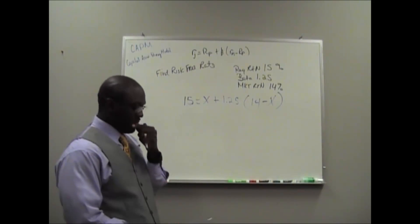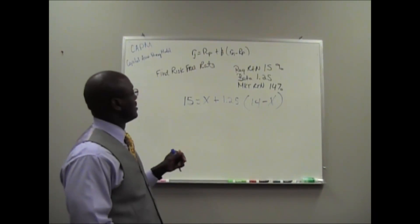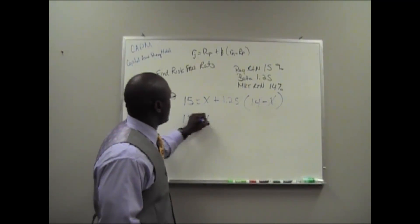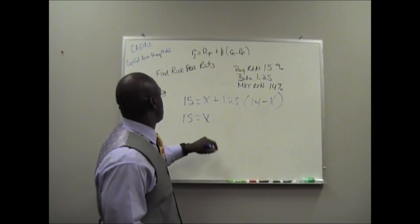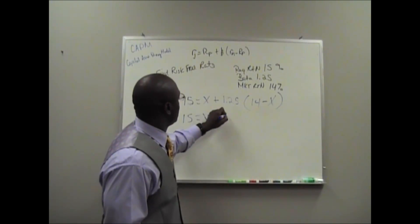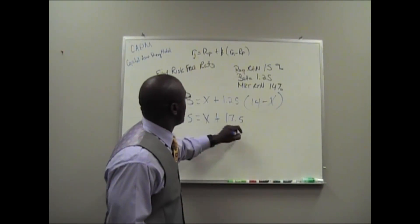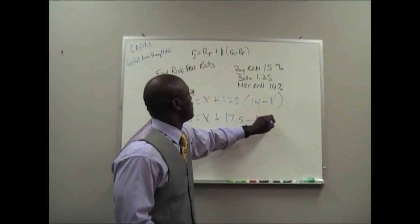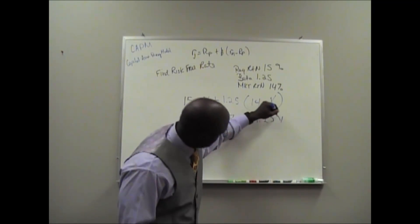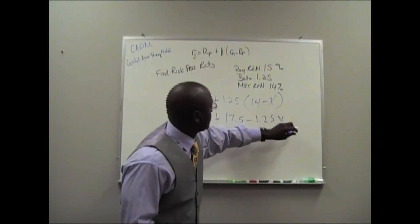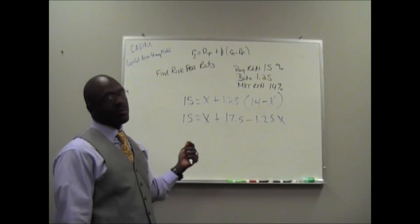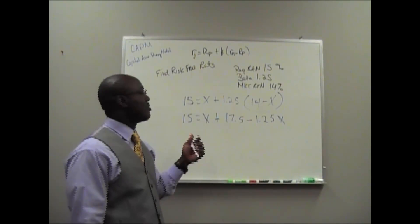So I might skip some steps because it's kind of simple. 15 equals X plus 17.5 minus 1.25X. It's implied that this is 1X, of course.